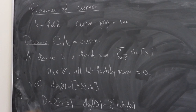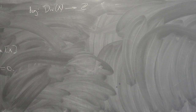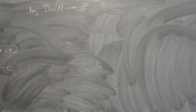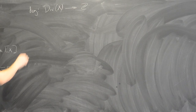The set of all divisors forms an abelian group, just by adding coefficients formally. That's denoted Div(C) — the group of all divisors. This degree map is a homomorphism from Div(C) to Z, and the kernel is called Div⁰, the group of divisors of degree zero.